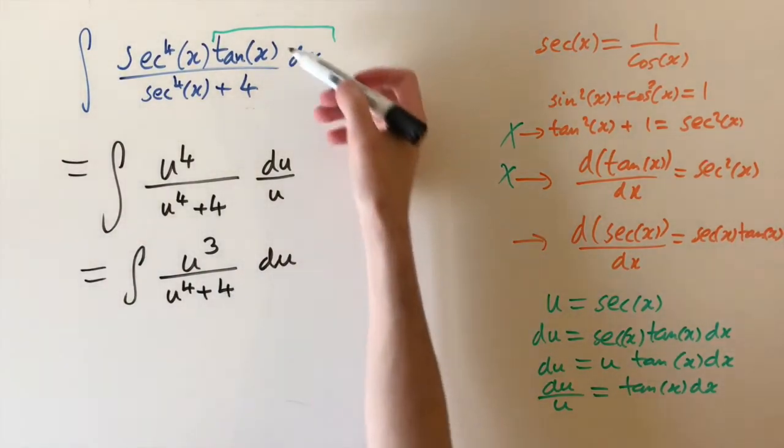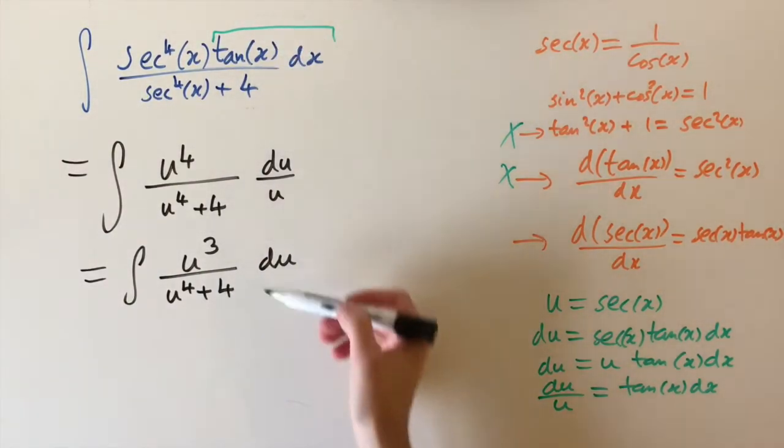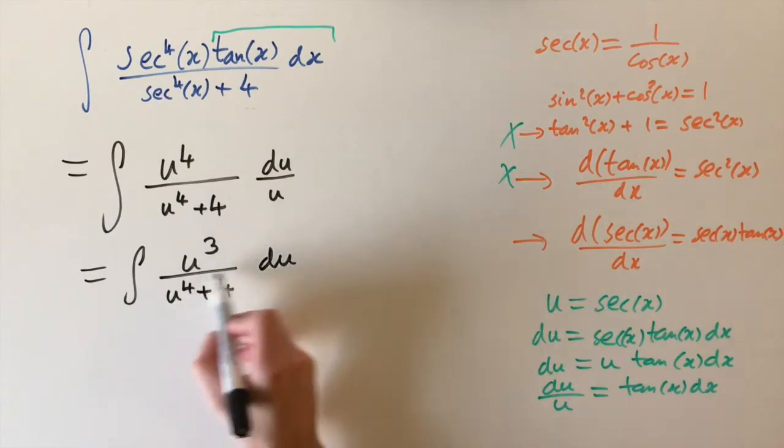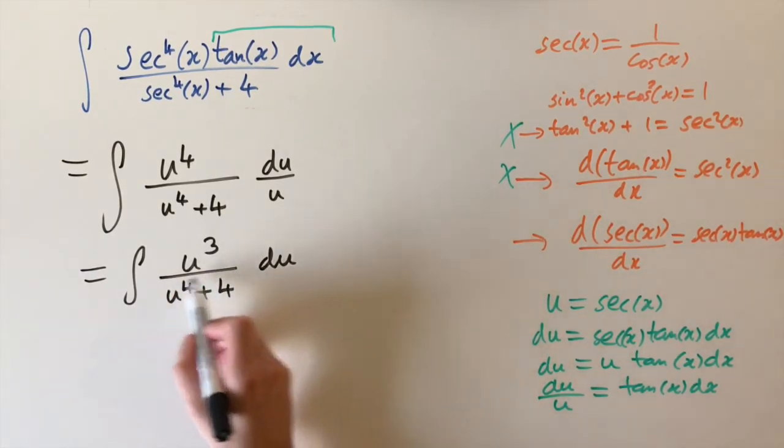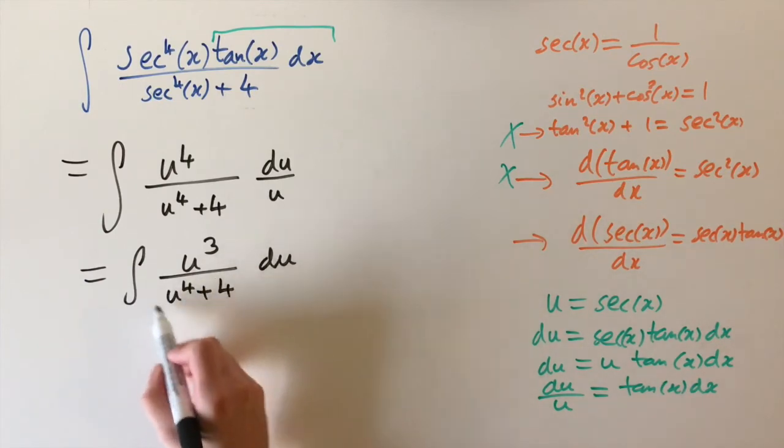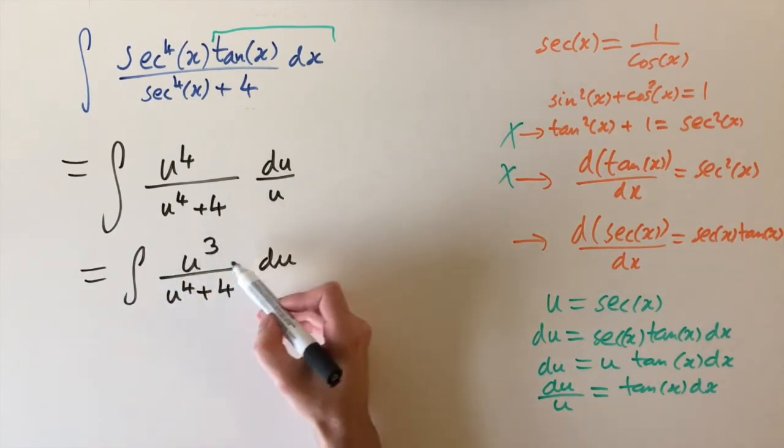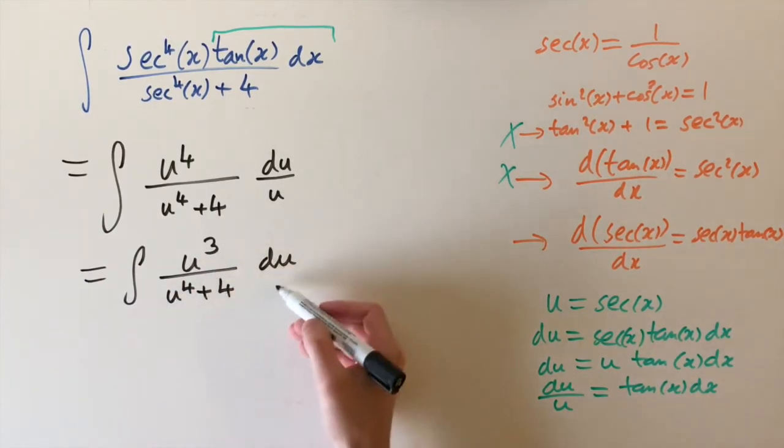And this is really nice. We've reduced a trigonometric integral into just a polynomial one. And we can actually integrate this straight away because we have a quartic, a polynomial of order four on the denominator, and we have a cubic on the numerator. So if we differentiate a quartic, we get a cubic.